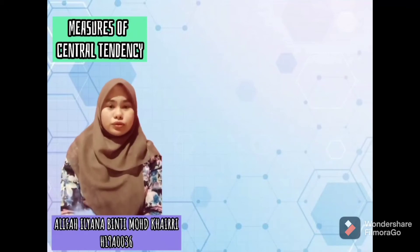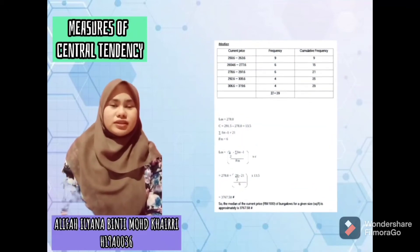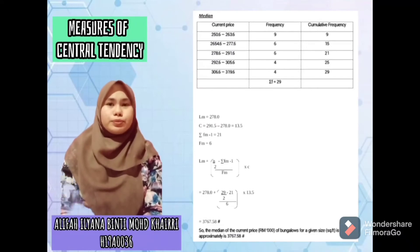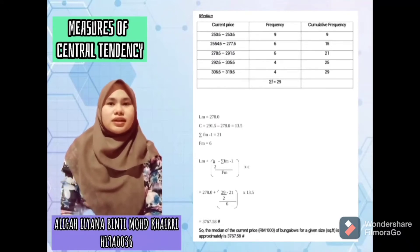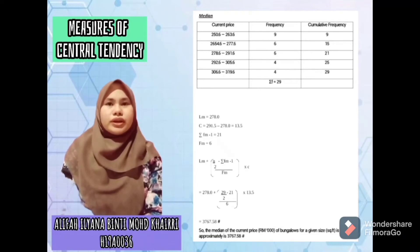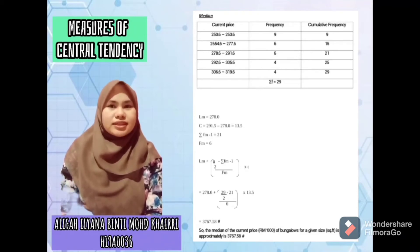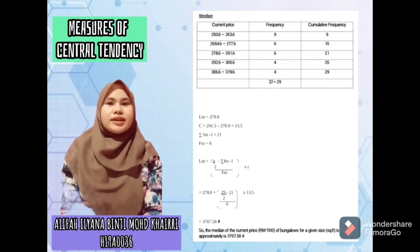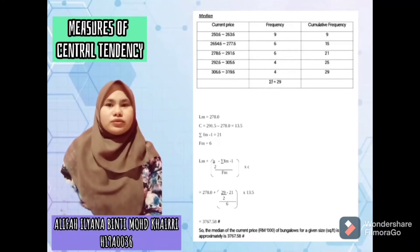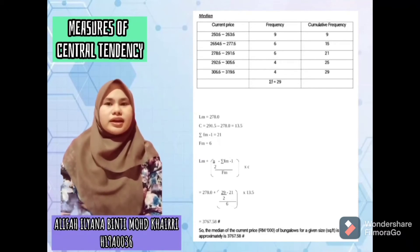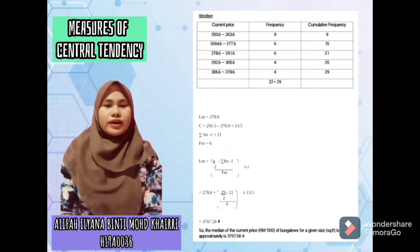Then we go to the median. First you need to know our median class. Our median class is 2780.6 to 2910.6. That is our median class. Then you have to find your LM — LM is the lower class boundary — and the class size. Divide accordingly, and you will get the answer: the median is approximately 376.70.58.